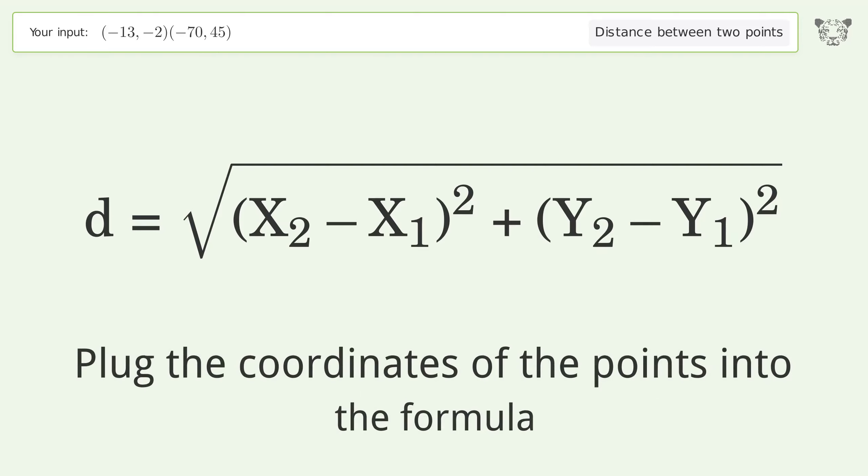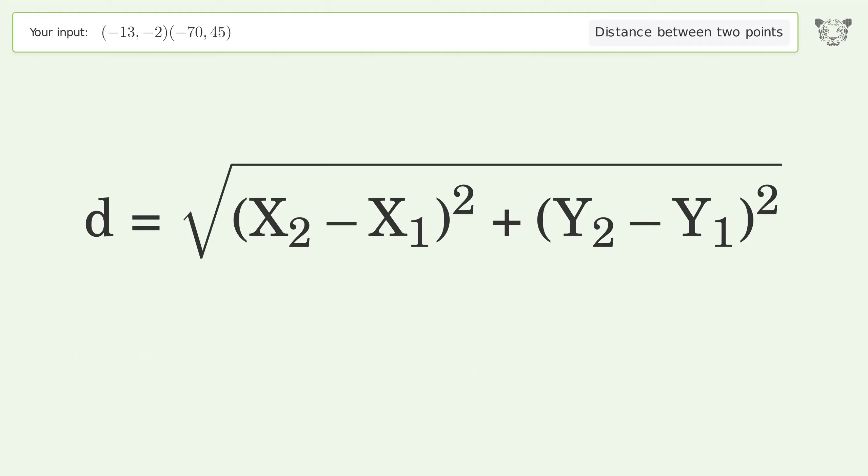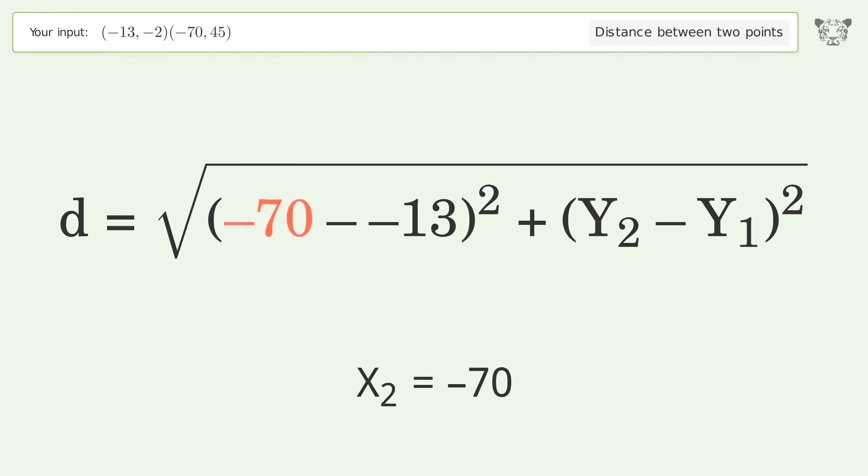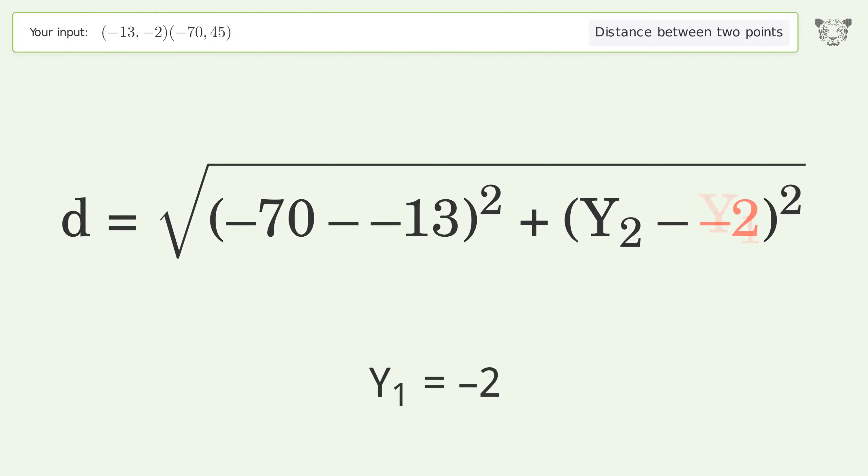Plug the coordinates of the points into the formula: x1 equals negative 13, x2 equals negative 70, y1 equals negative 2, and y2 equals 45.